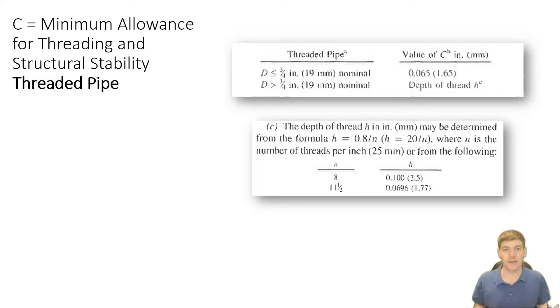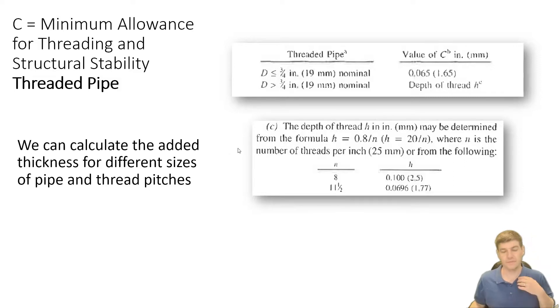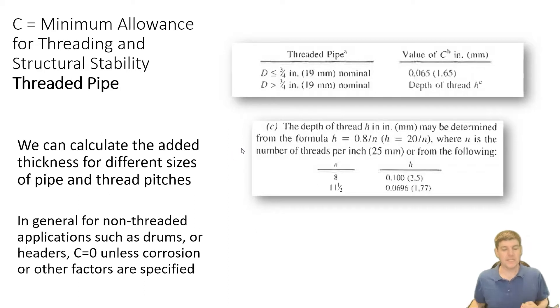If we do cut threads into the pipe, then we have a couple of equations in this clause that tell us how much thickness to add. And that's going to be depending on the size of the pipe, the type of threads we're cutting in. But in general, for non-threaded pipes, so drums and headers, we would not have to add a C value to this, unless we're specified that we need to add some amount for corrosion allowance or something. And that would be the C value that you would add to.